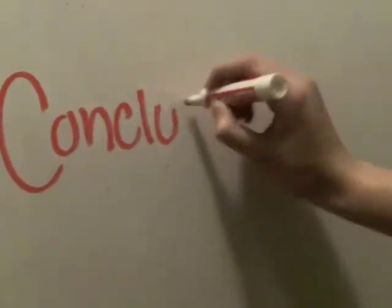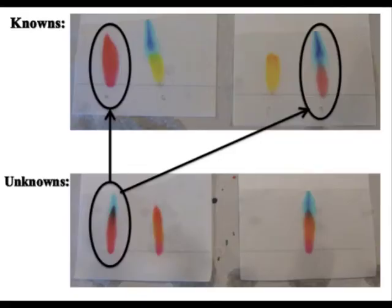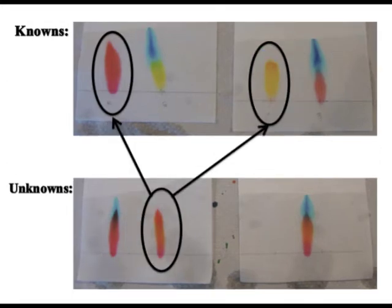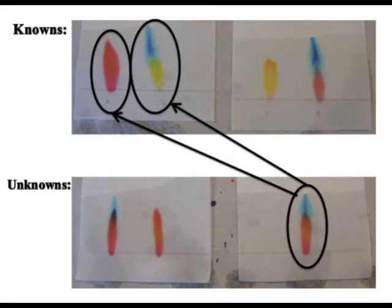Now match the color combinations and compare the RF values for the components to identify which dyes are present in each of the three unknowns. Based on our findings, we'd say that unknown number one is a combination of the red and blue dye, unknown number two is red and yellow, and unknown number three is red and green.